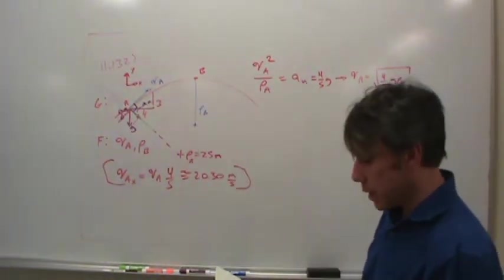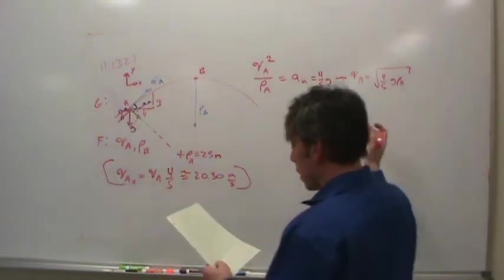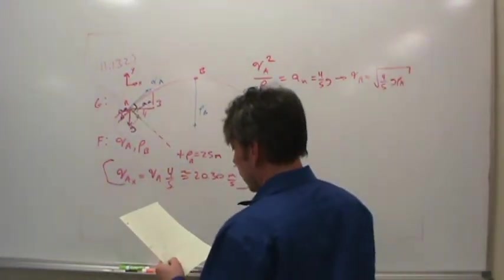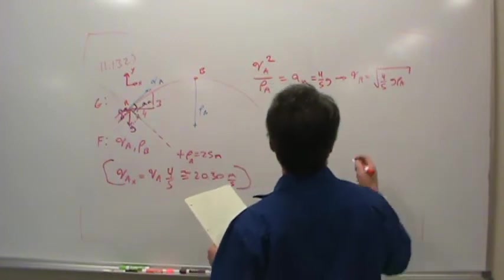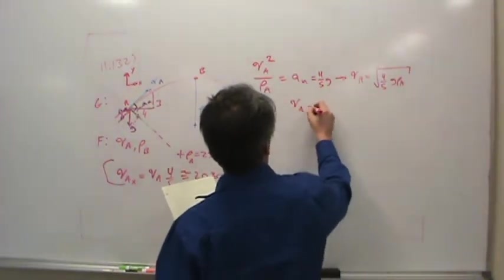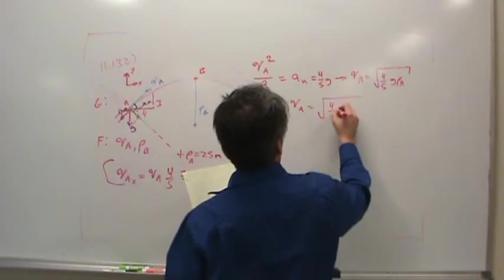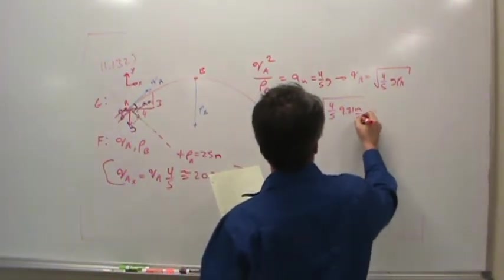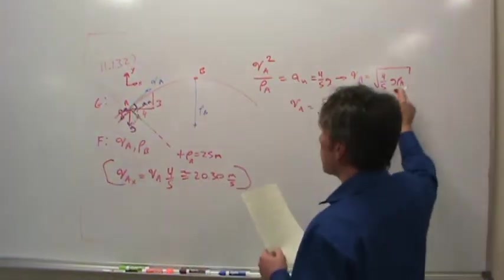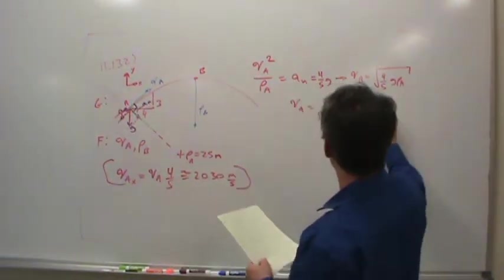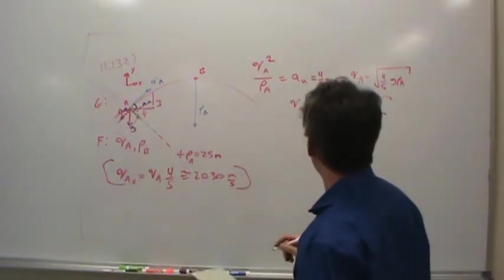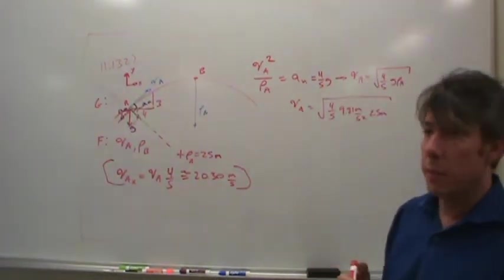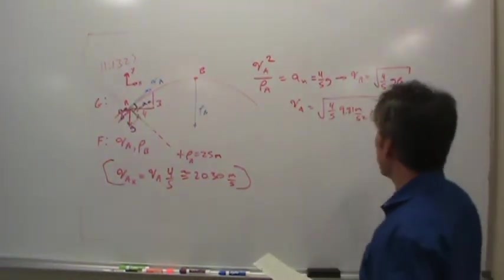Now, this is where I need some calculator help because, like I said, I plugged in g in units of 32.2 feet per second squared. Anyway, VA is the square root of four-fifths. g is 9.81 meters per second squared. And the radius of curvature at A we were given is 25 meters. So a couple people, please plug that in your calculators and see what we come up with.